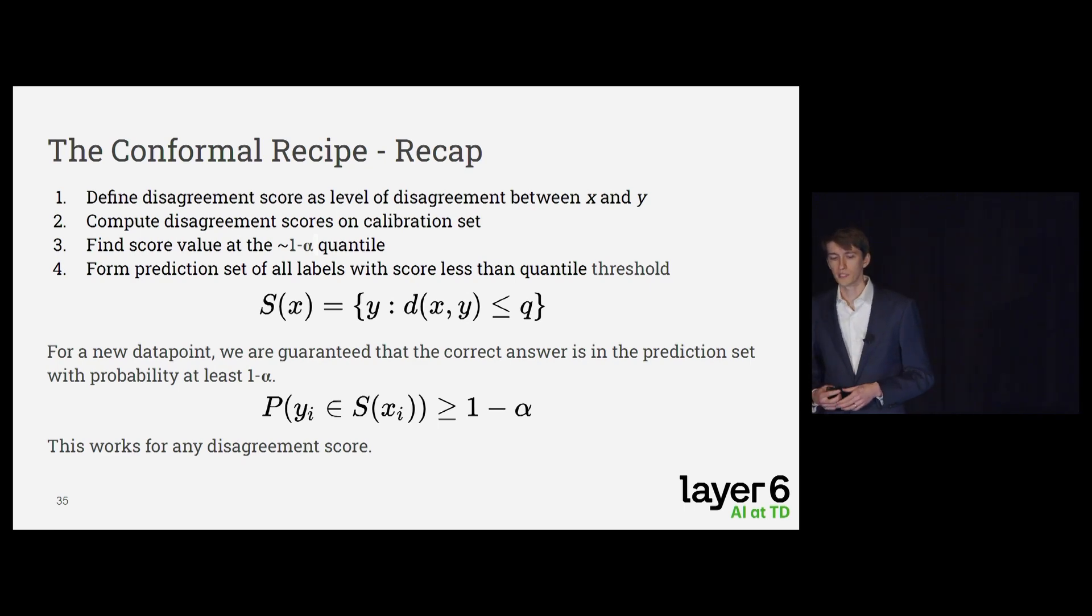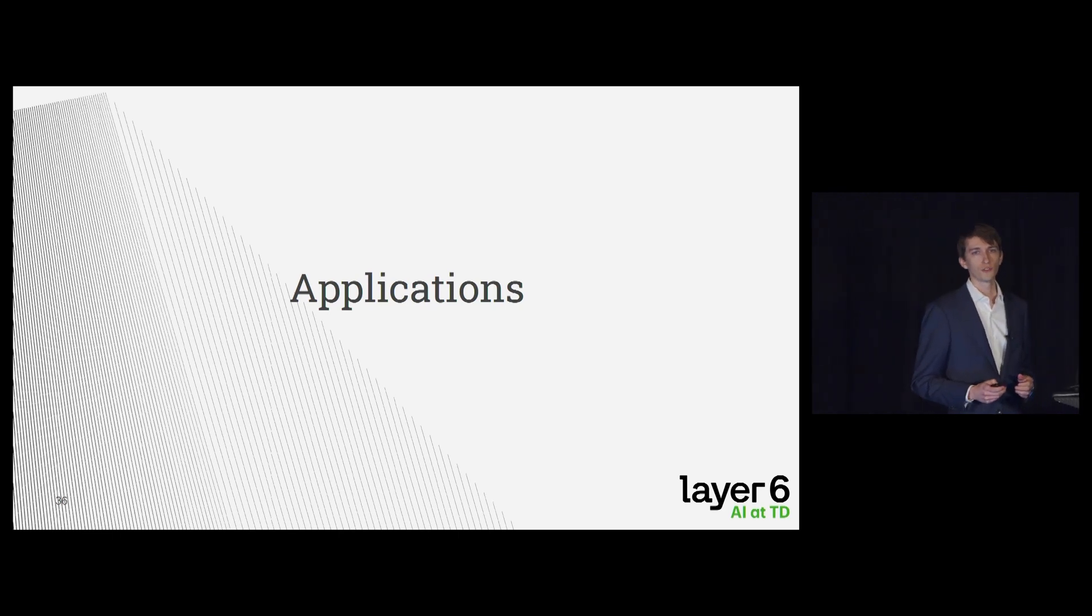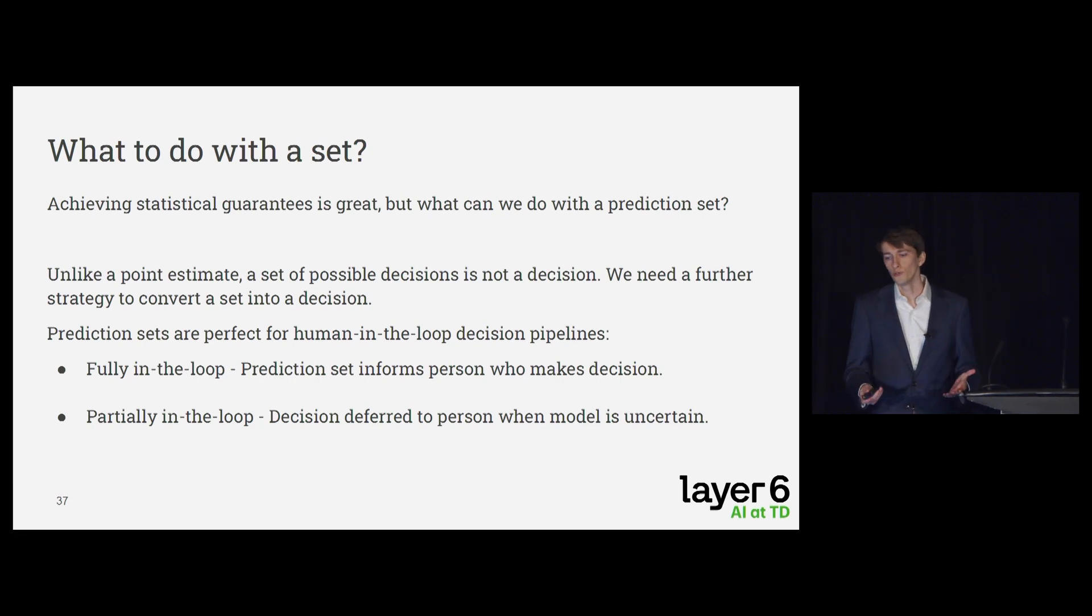Okay, so just to recap, we had four steps. We define a disagreement score using a heuristic notion of uncertainty. We compute disagreements on the calibration set and find the one minus alpha quantile. And then from then on, once we've got that quantile, that's all we need, that threshold q, we can compute prediction sets by adding everything with disagreement less than that quantile. And the magic is, when we follow this recipe, conformal prediction guarantees that the correct answer will be in the prediction set with probability one minus alpha. And for the experts in the room, there's a caveat in number three, it's not quite the one minus alpha quantile. It's a finite sample correction to that, but simple enough for this talk.